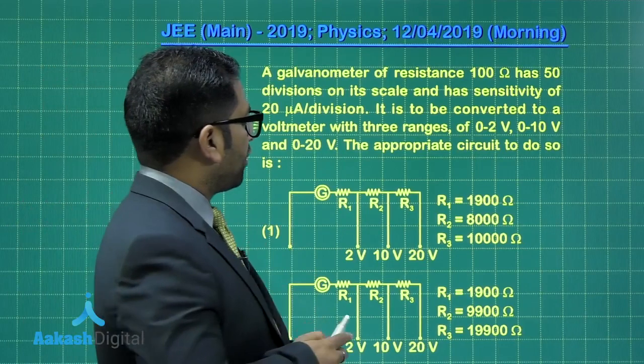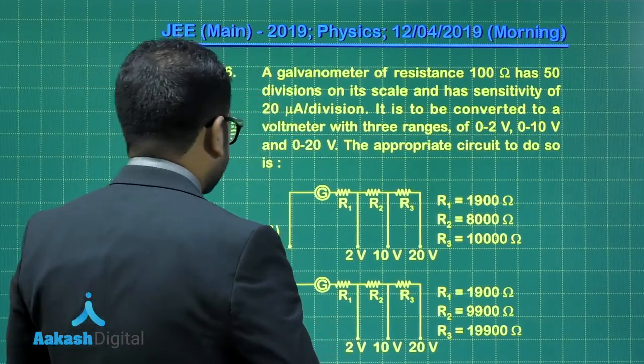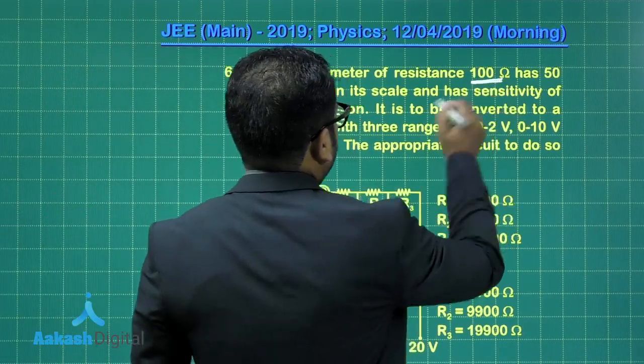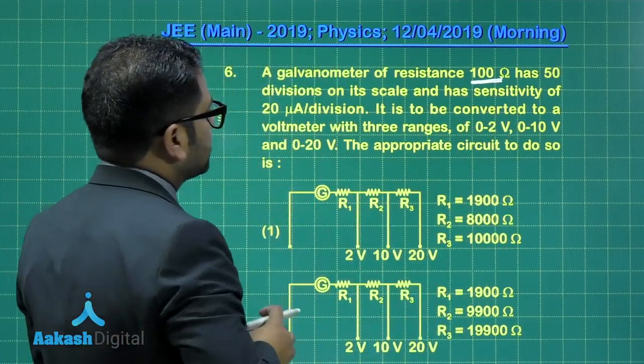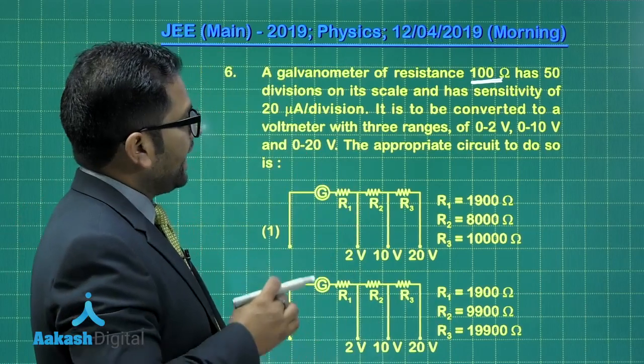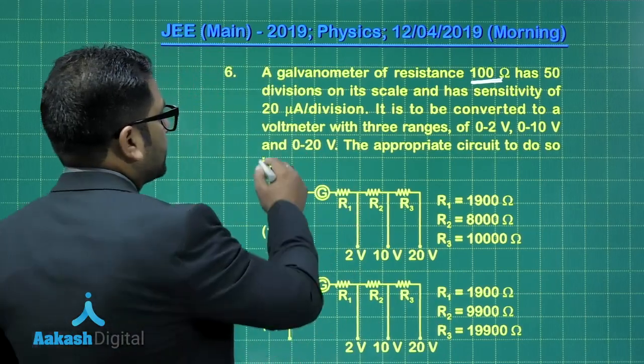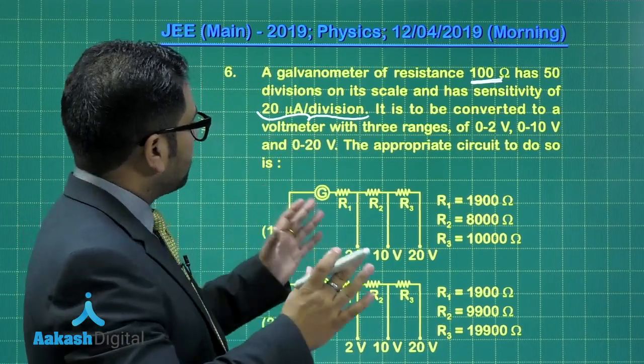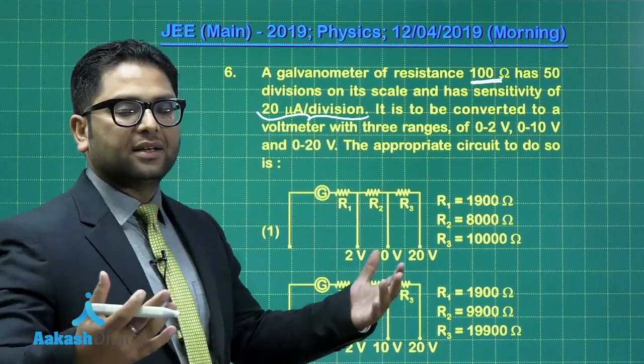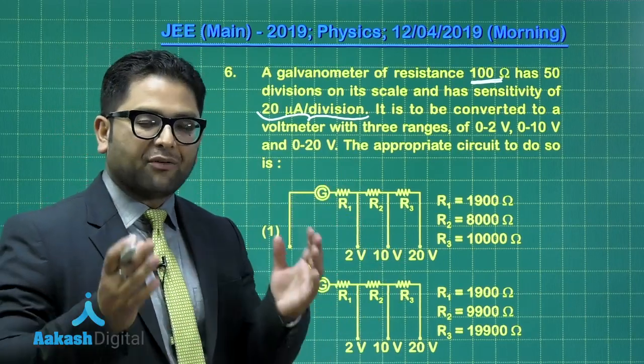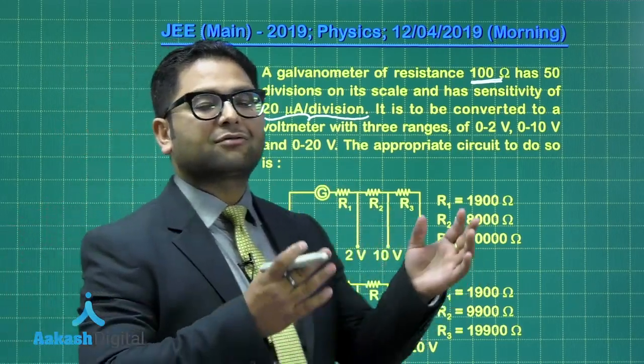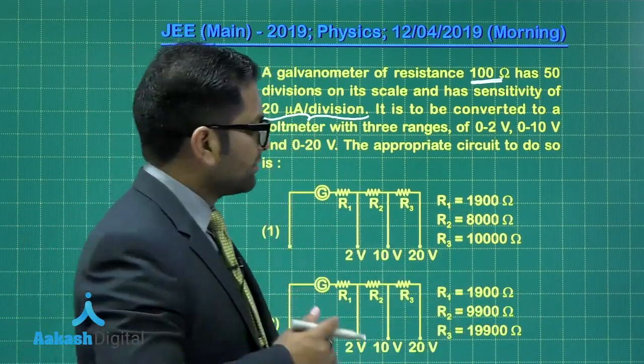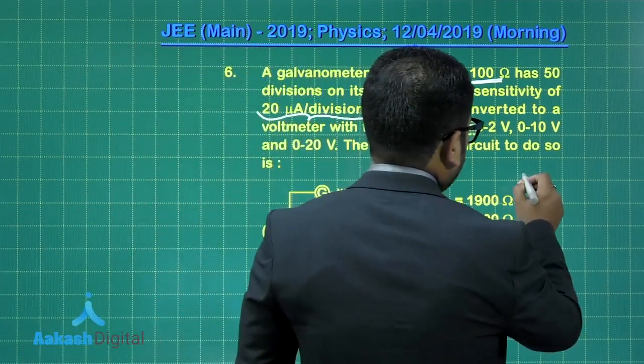A galvanometer of resistance 100 ohm has been given. So the galvanometer resistance is there which is 100 ohm. 50 divisions on its scale and has a sensitivity of 20 micro ampere per division. So I think with the help of this data, I can calculate the range of the galvanometer. By range, we mean to say the current required for full scale deflection. Let me do that. But I can do it very easily in this way.